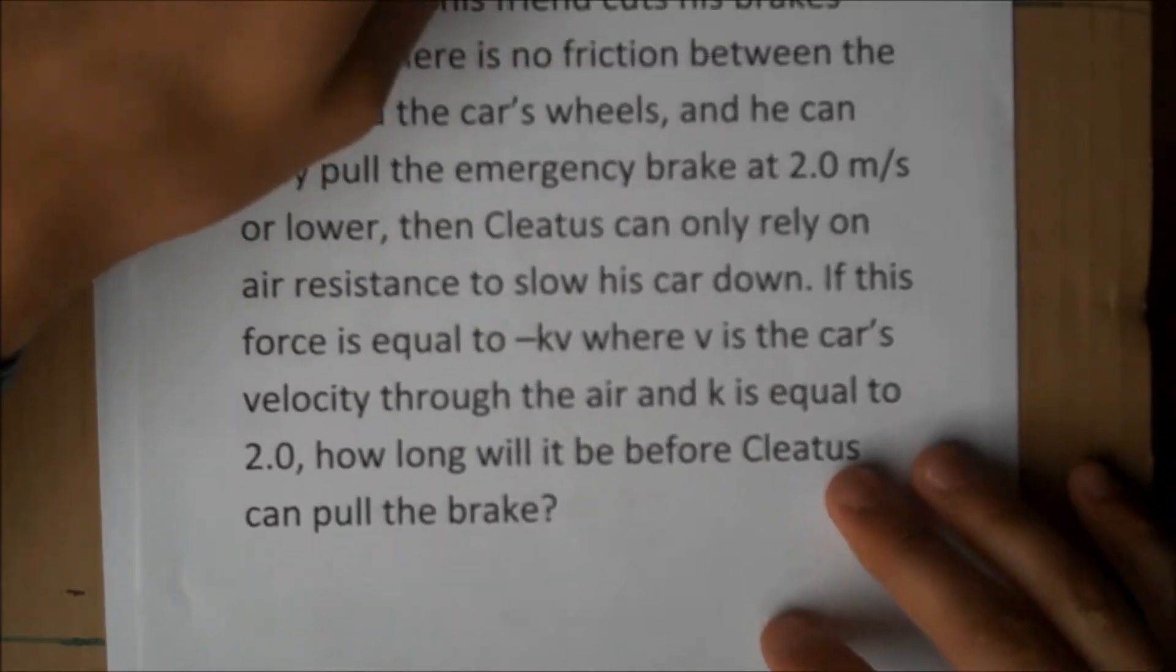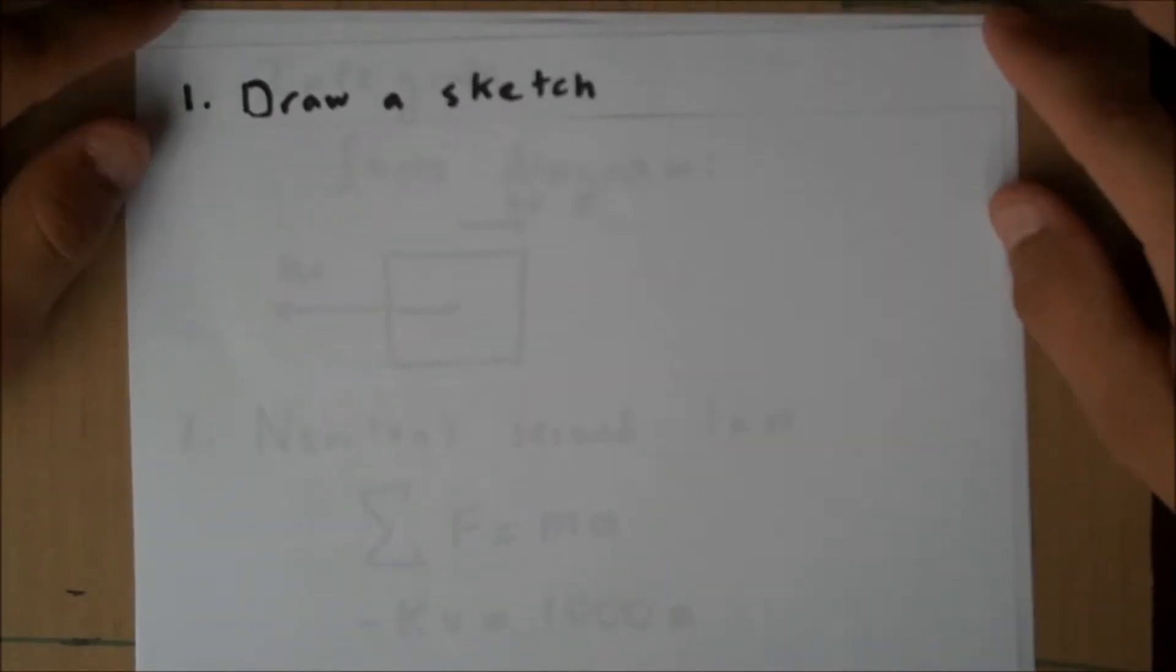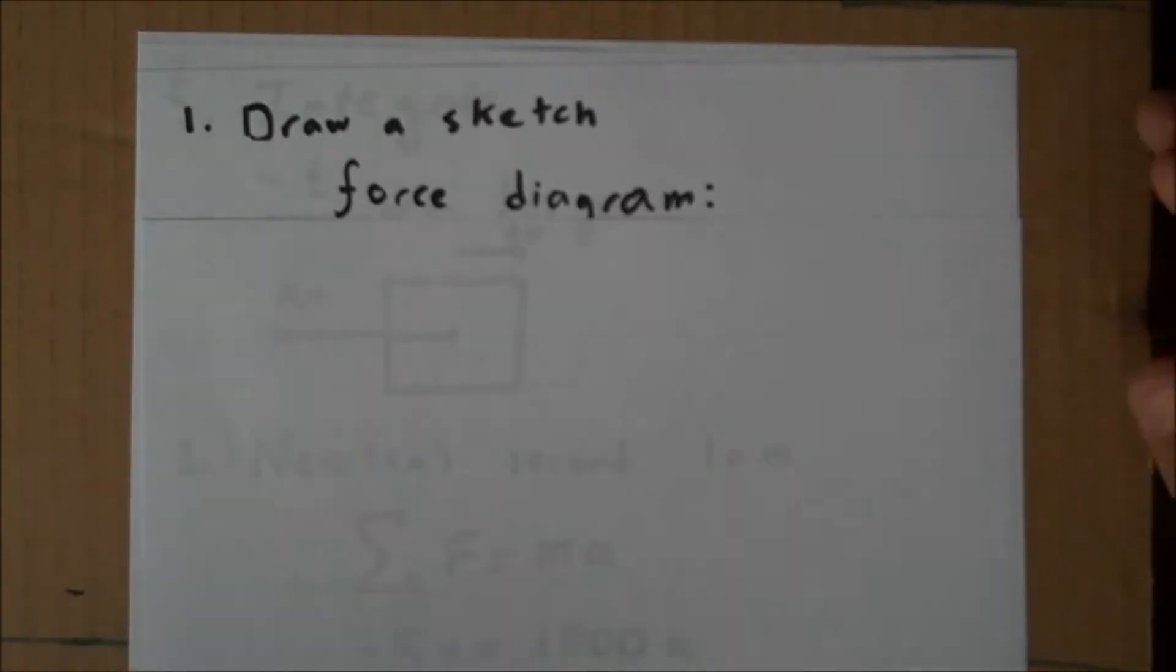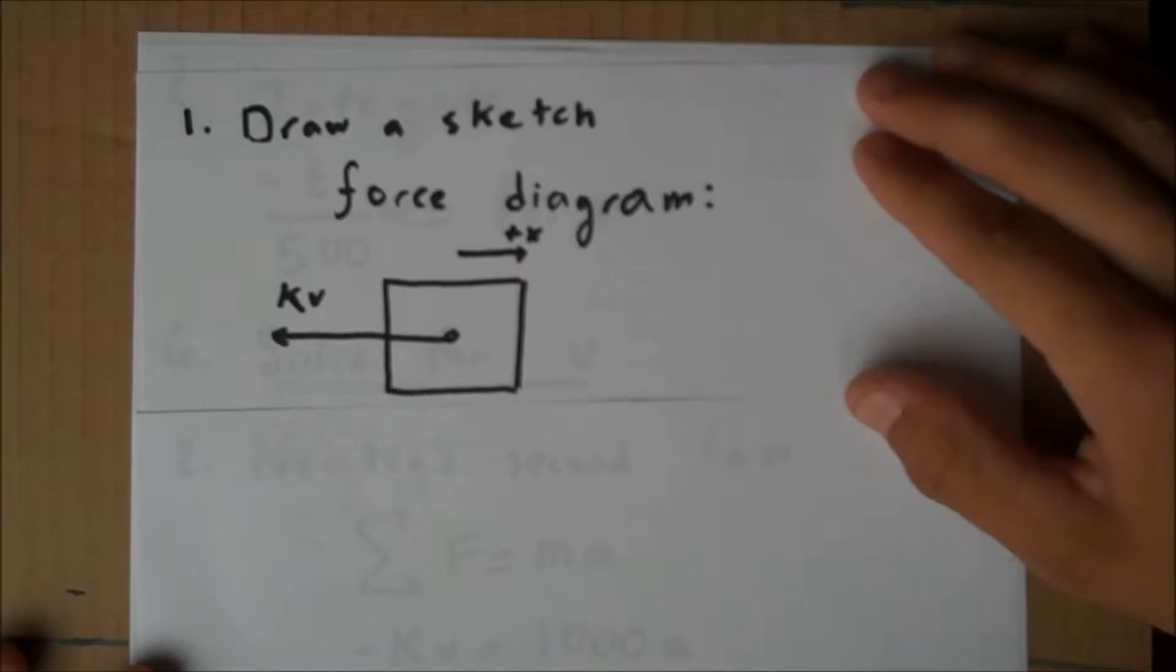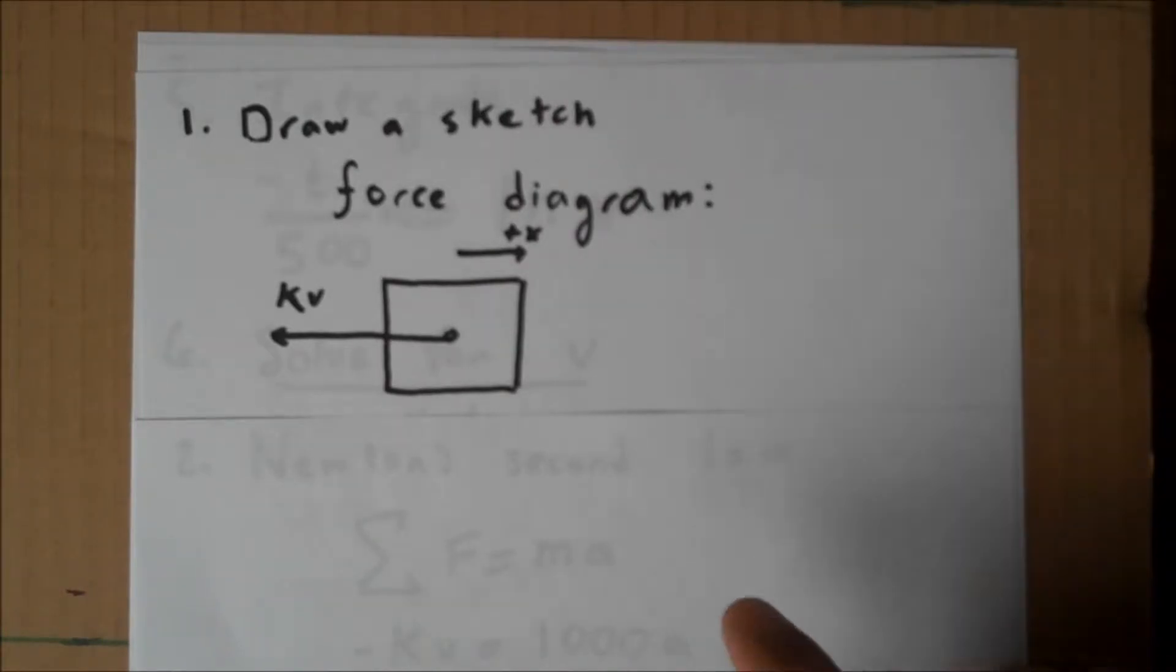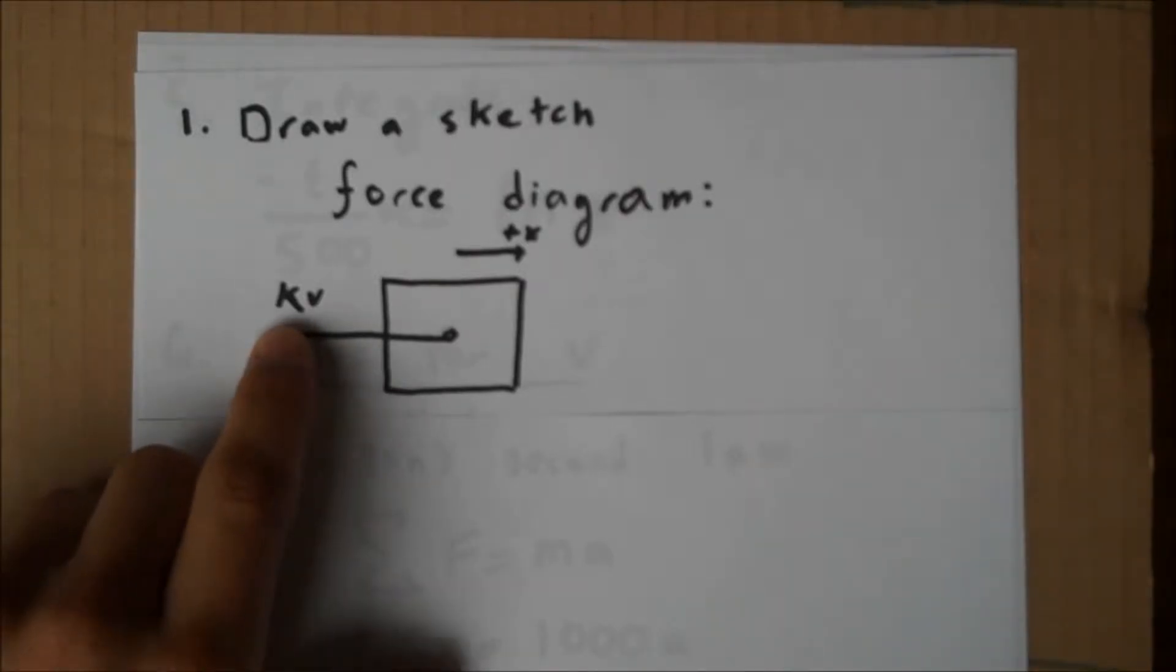Okay. So, as with any problem in physics, our first step is draw a sketch. This time, let's draw a force diagram because we're concerned with the changes in velocity. So here, let's imagine this is our car, and this is the positive x direction. The only force acting on the car is not the force of the brakes, his brakes have been cut, but the backwards force of air resistance equal to kv.